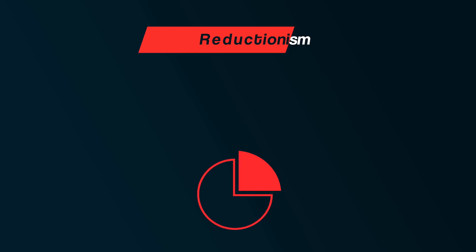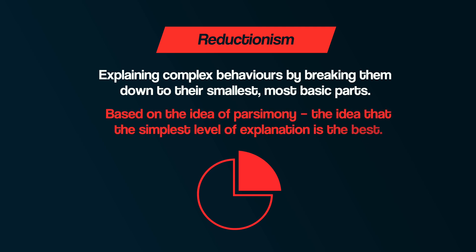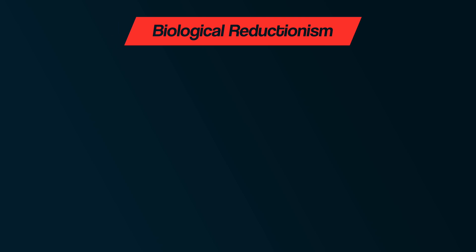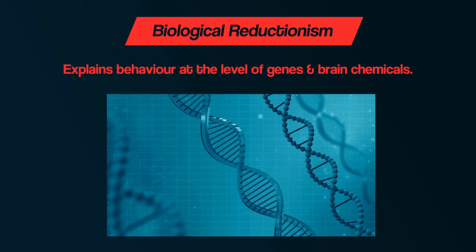Reductionism can be defined as explaining complex behaviors by breaking them down to their smallest, most basic parts. This is based on the idea of parsimony — the idea that the simplest level of explanation is the best. There are different types of reductionism, two of which we'll explore here. Firstly, biological reductionism, which explains behavior at the level of genes and brain chemicals.